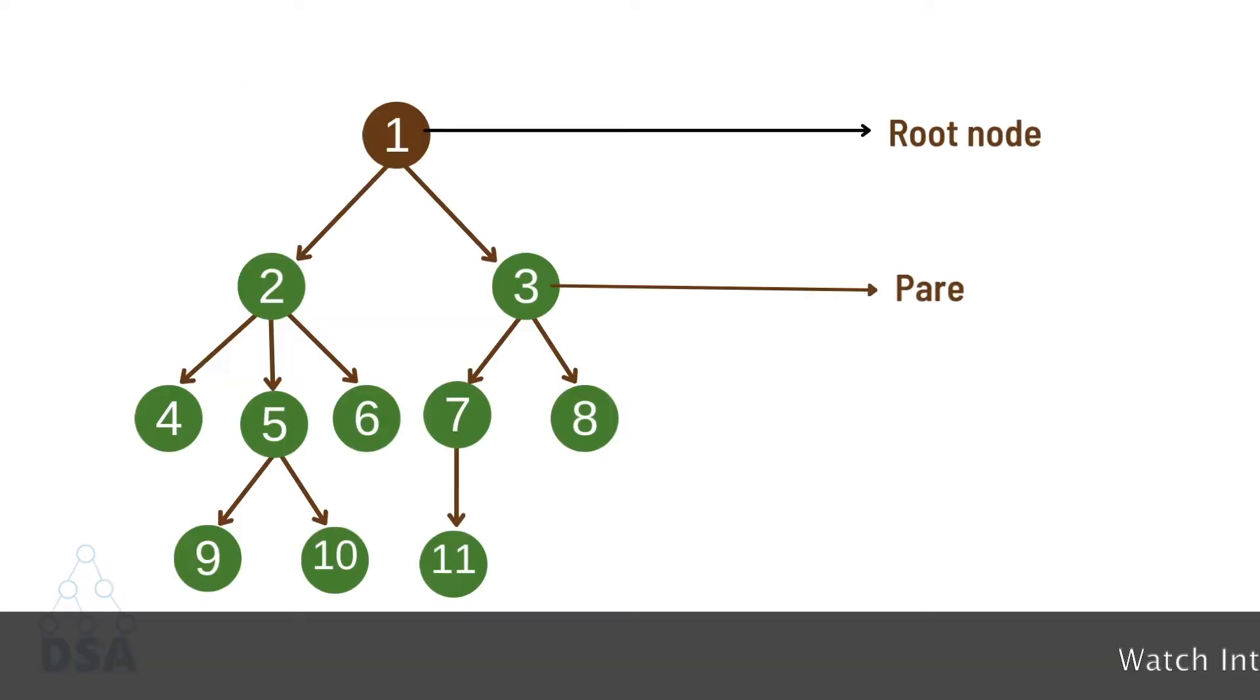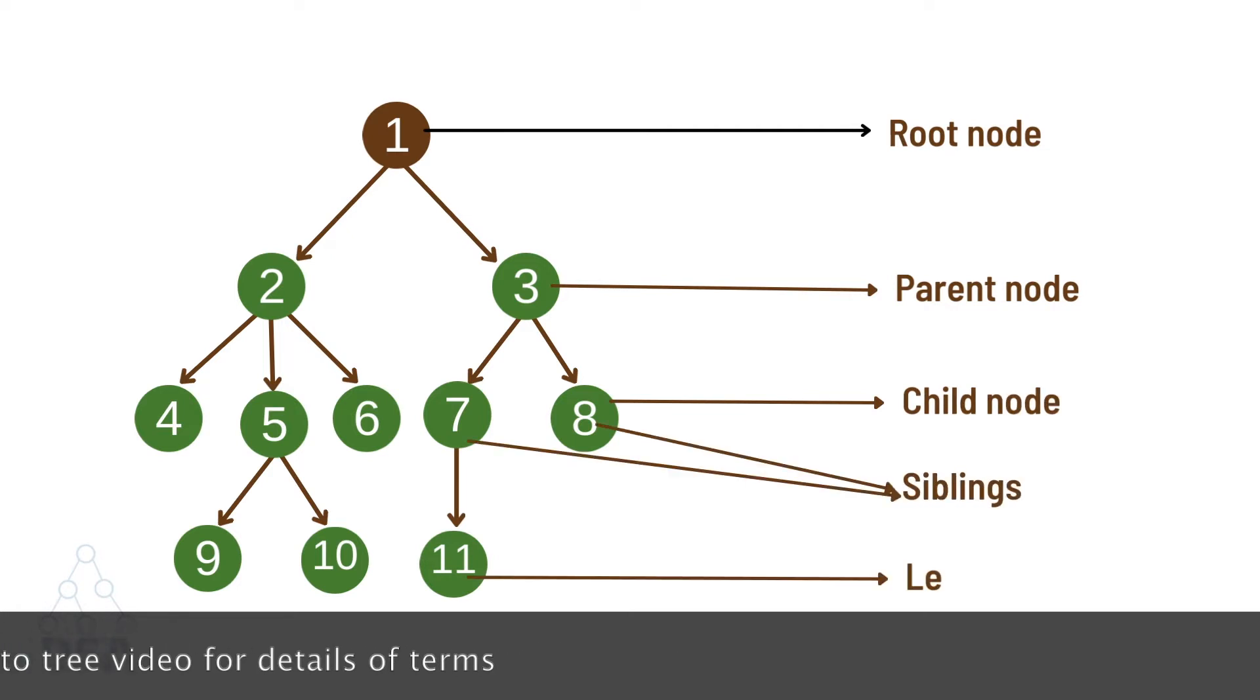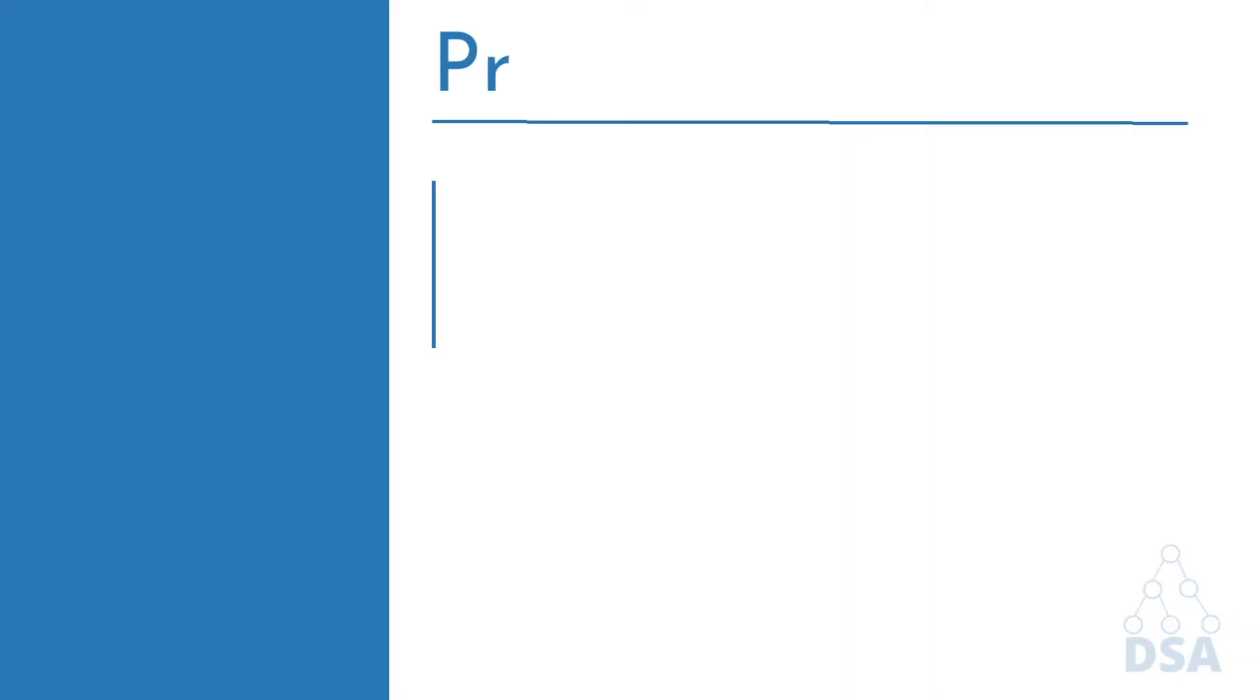Root node, parent node, child node, siblings, and leaf node. Now let's see the properties of tree.